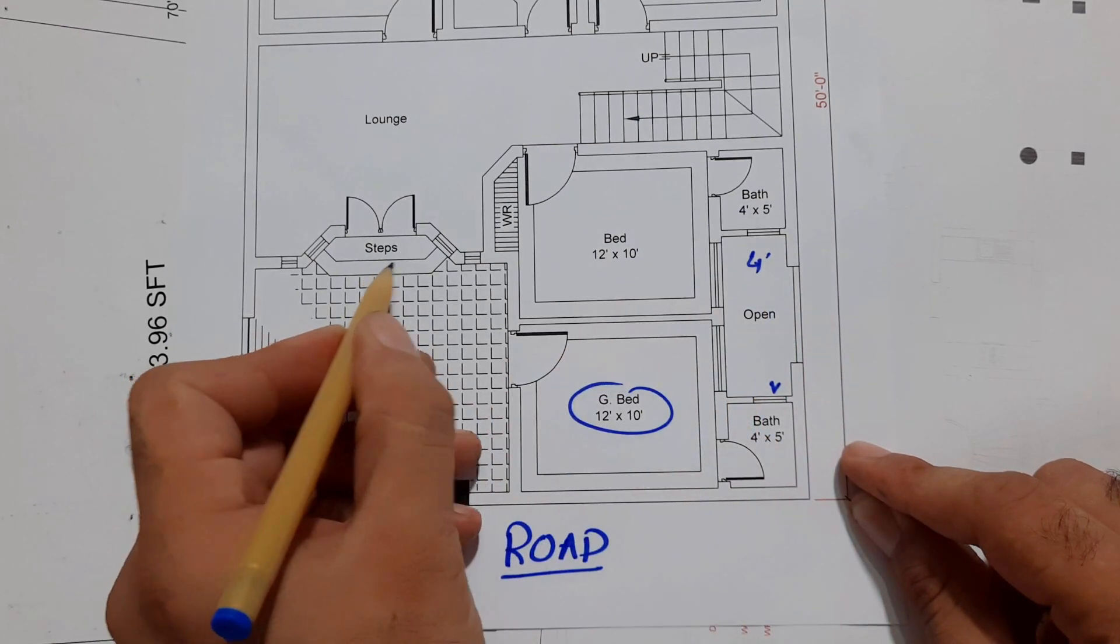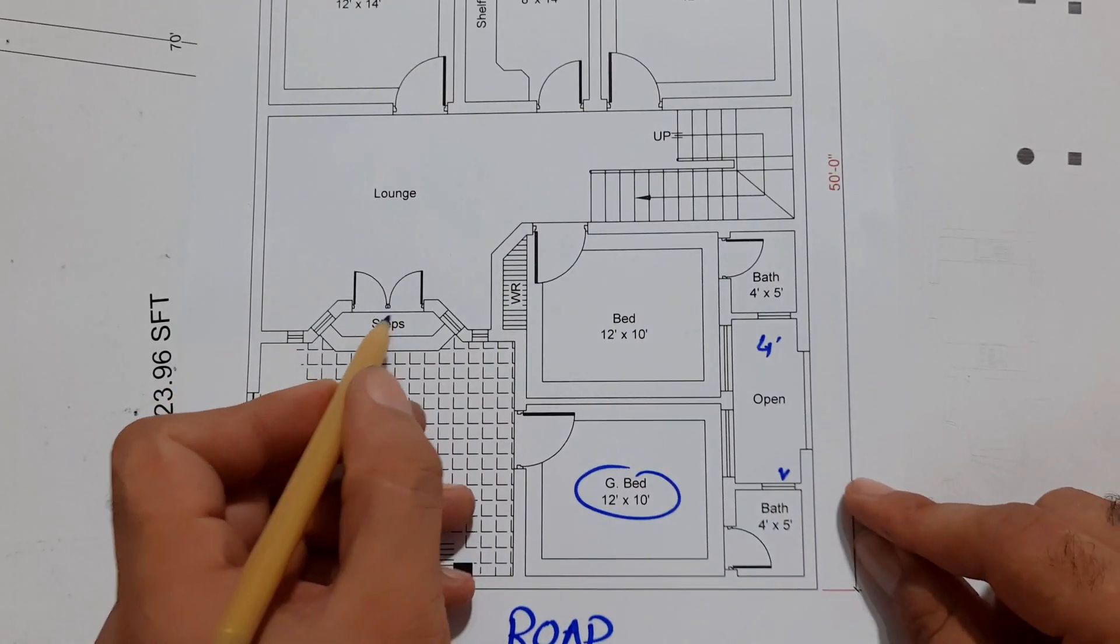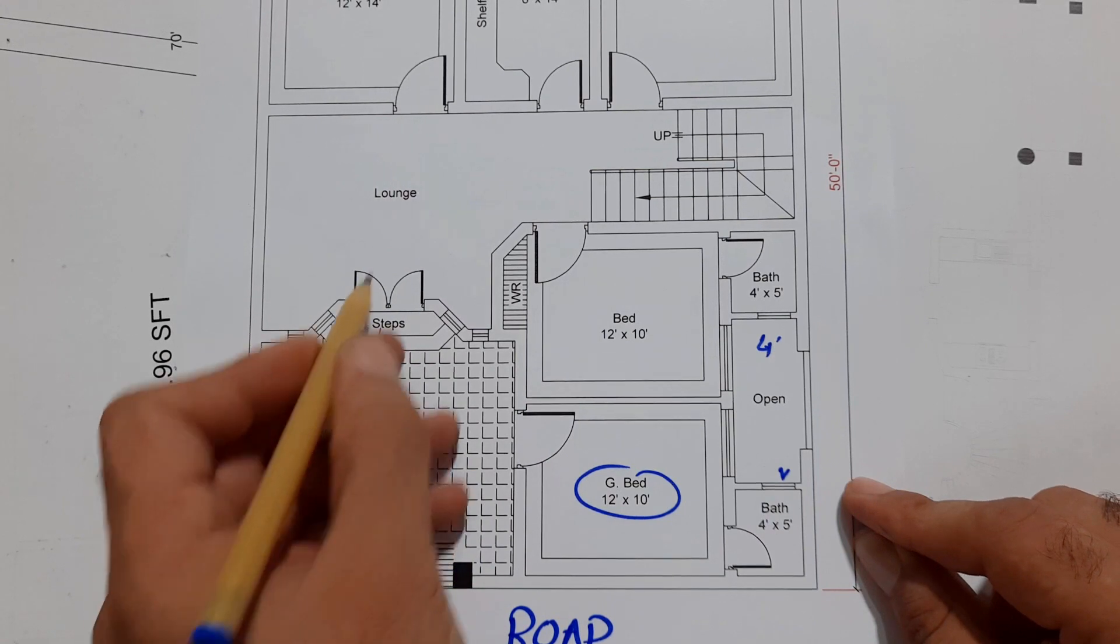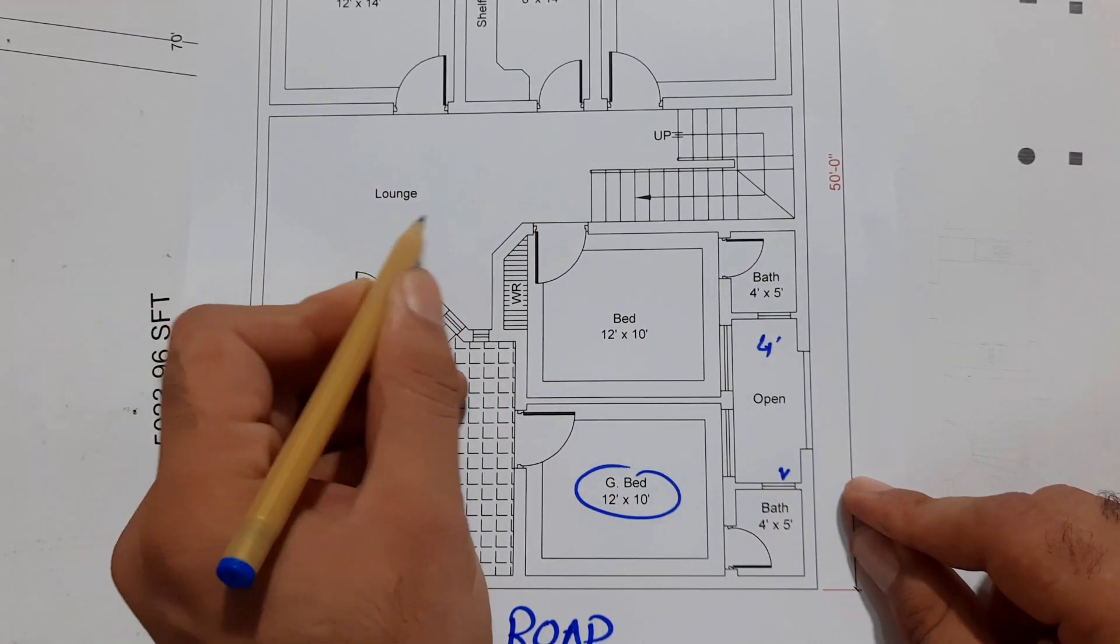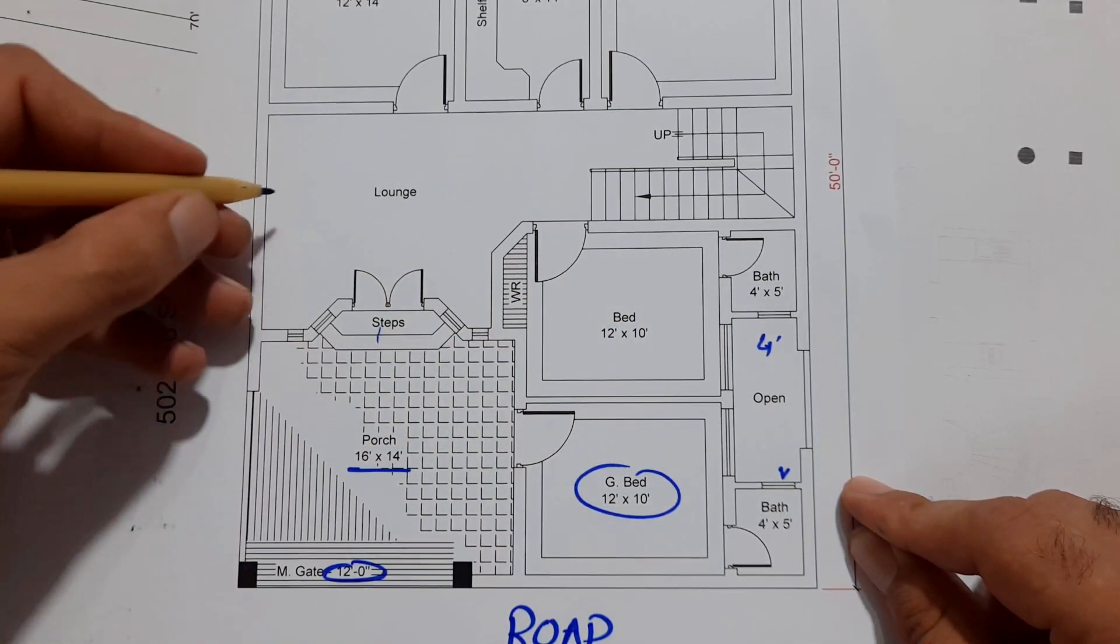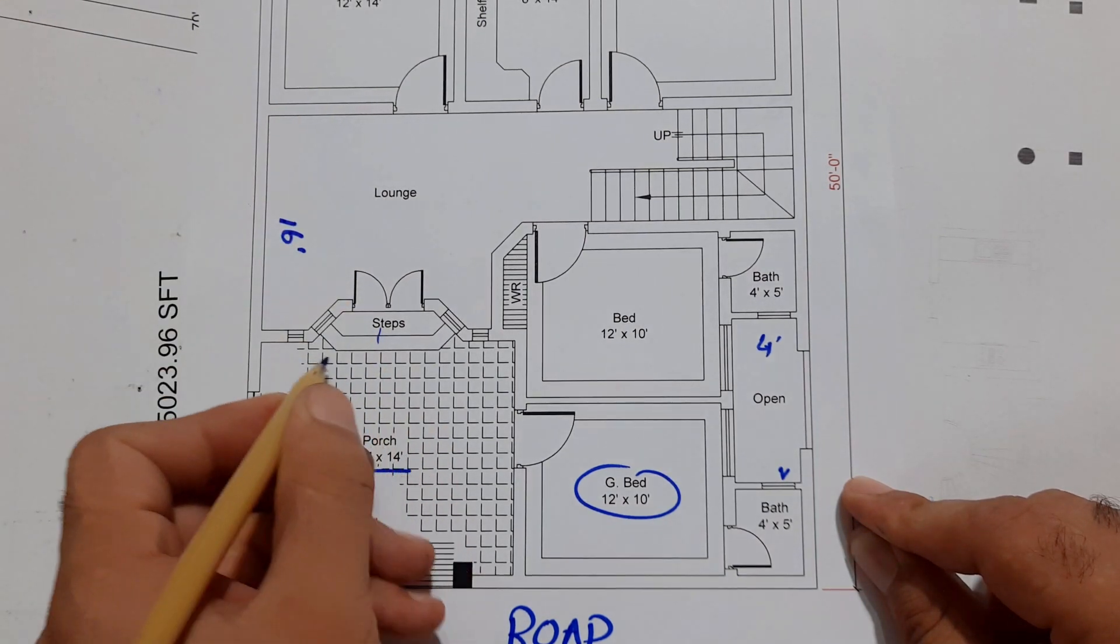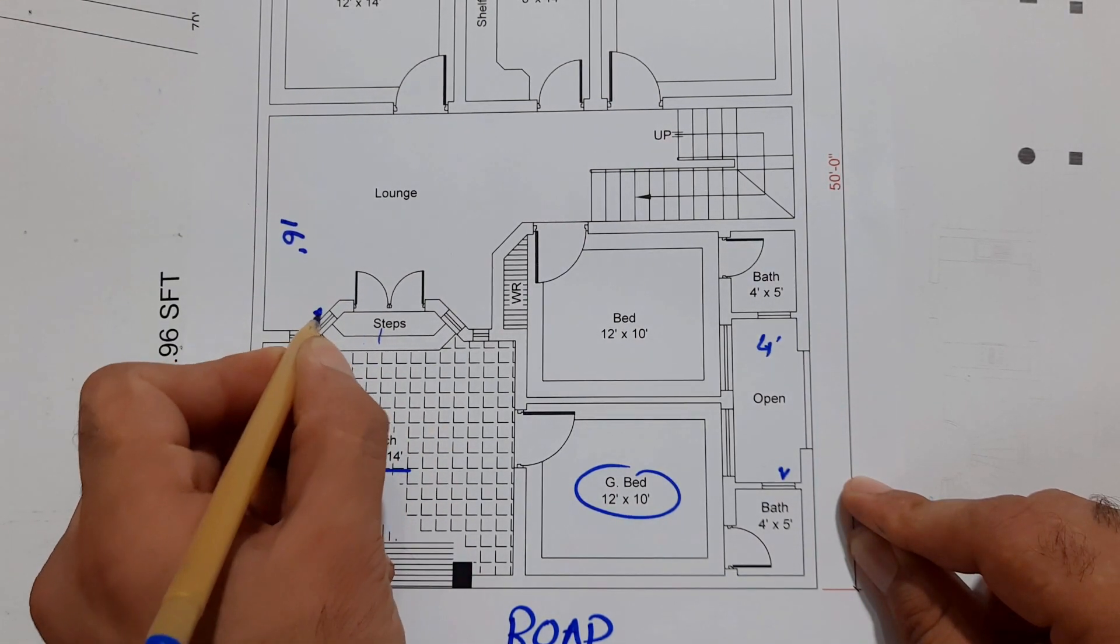Next, you can see these are steps for this main entrance. This is TV lounge and its width is 16 feet. You can see these are windows.